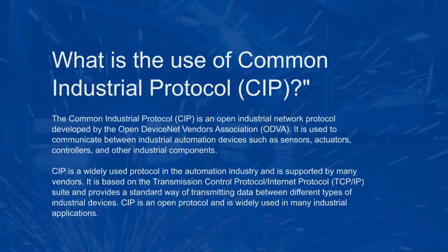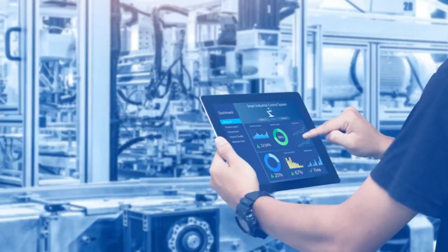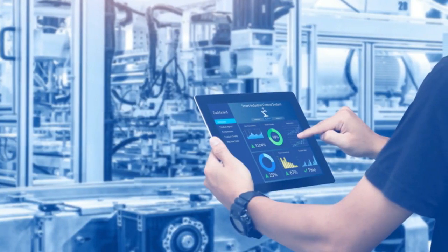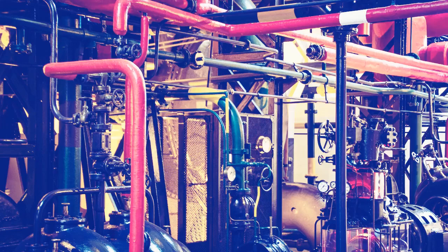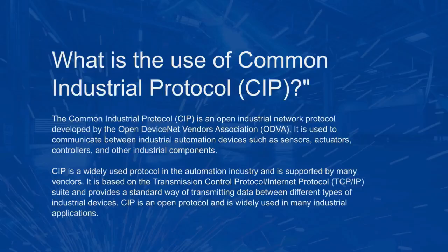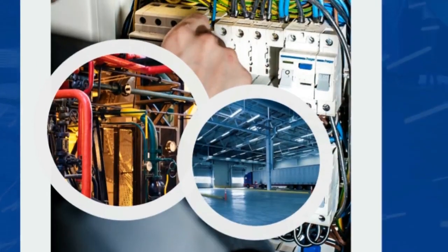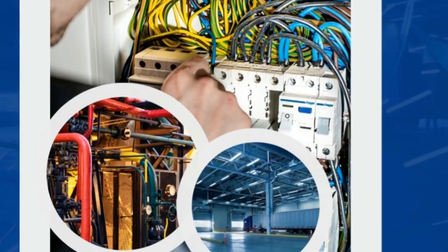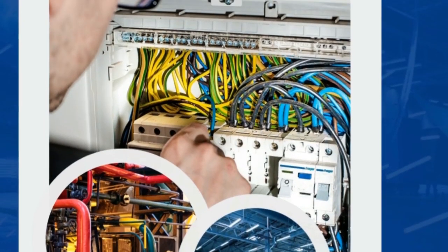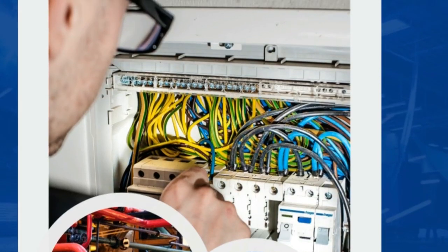What is the use of Common Industrial Protocol CIP? It is used to communicate between industrial automation devices such as sensors, actuators, controllers, and other industrial components. CIP is a widely used protocol in the automation industry and is supported by many vendors. It is based on the Transmission Control Protocol Internet Protocol and provides a standard way of transmitting data between different types of industrial devices. CIP is an open protocol widely used in many industrial applications.